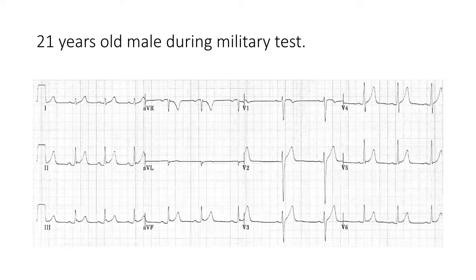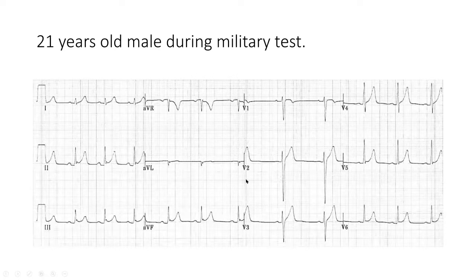This is an ECG from a 21-year-old male during his military test. Starting from lead 1, 2, 3, the only obvious finding is some sort of notching and ST elevation in the inferior leads, and similarly in the precordial leads. The young male was completely asymptomatic and this was an incidental finding.